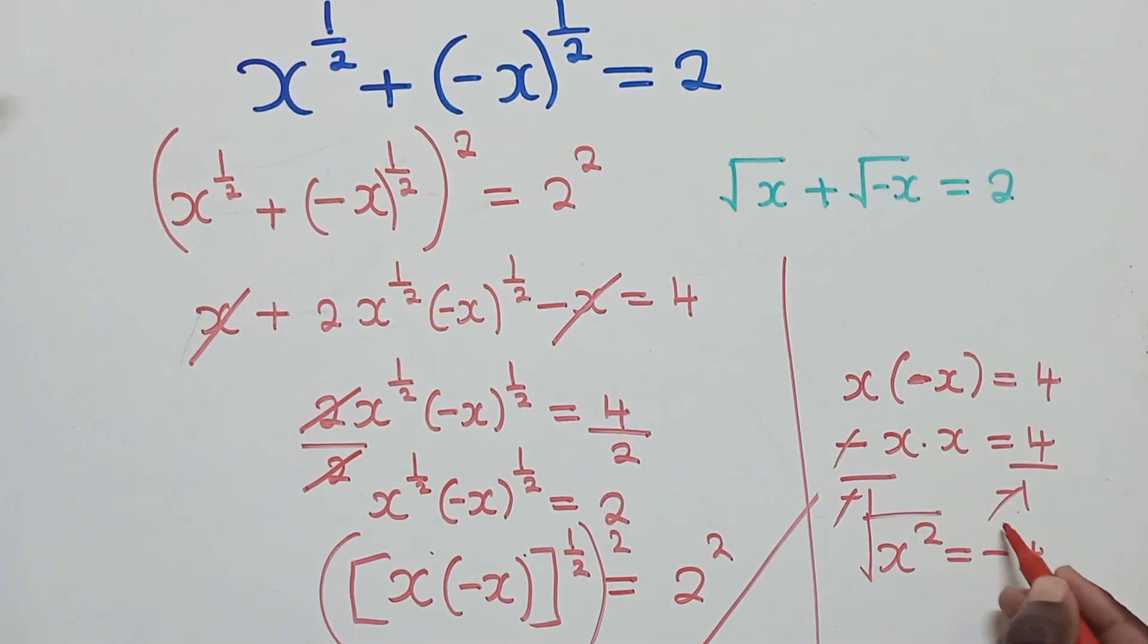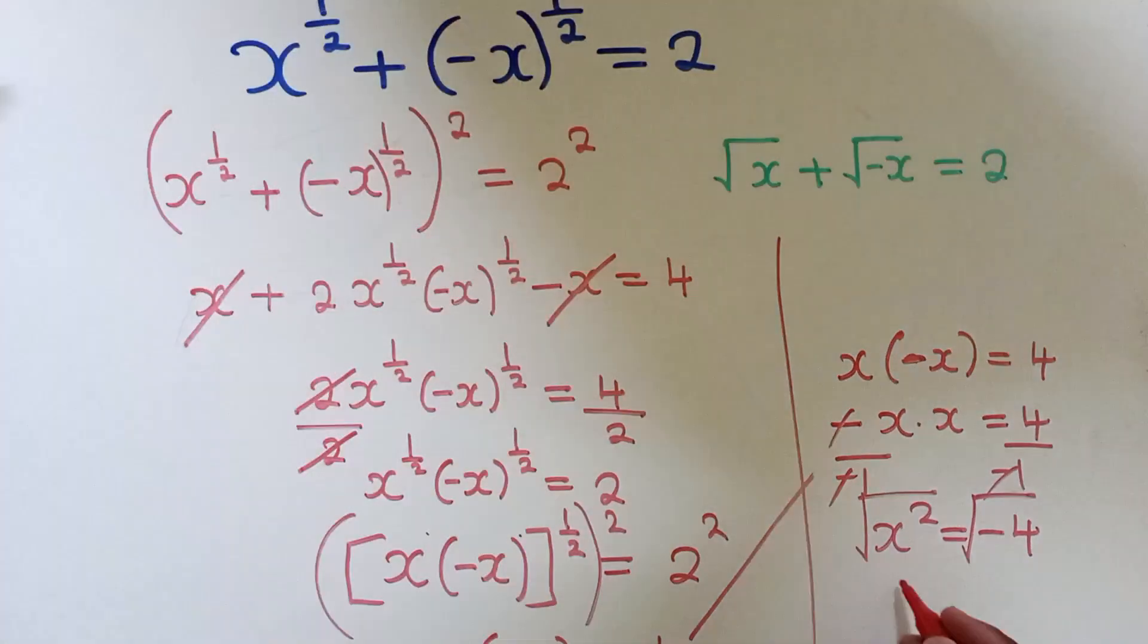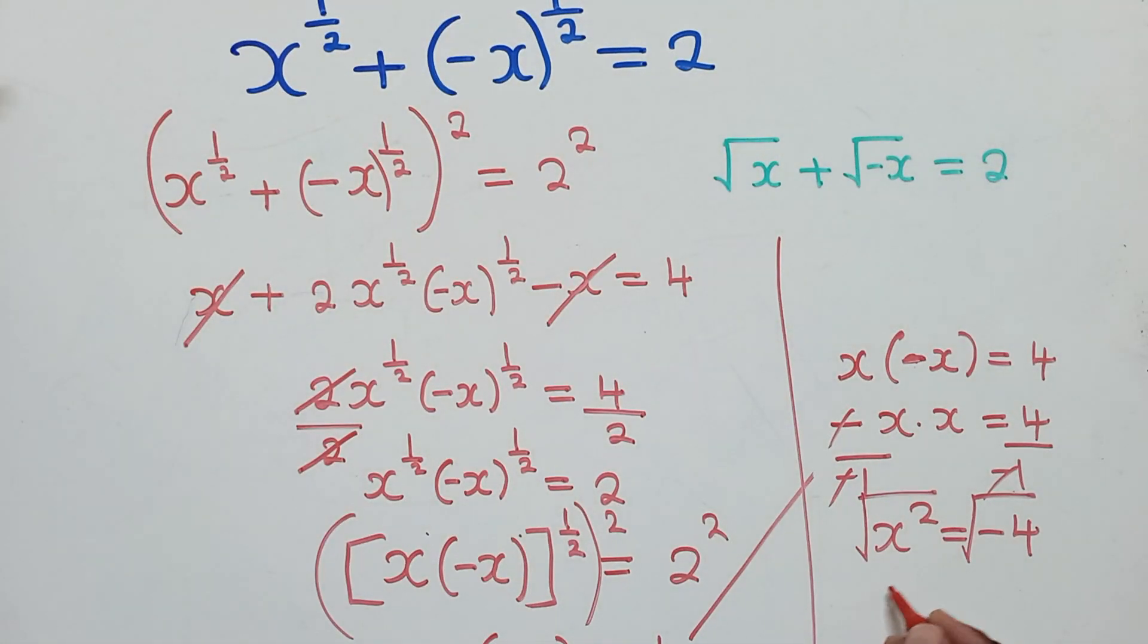To find the value of x, we square both sides to get rid of the power 2 here. So I'm going to have x is equal to negative or positive 2i.